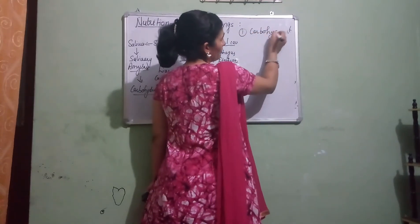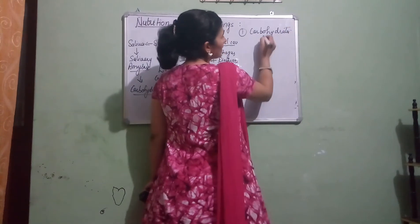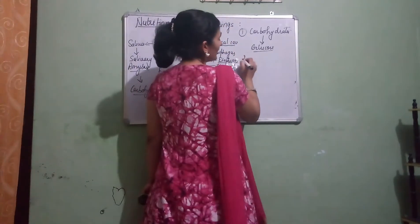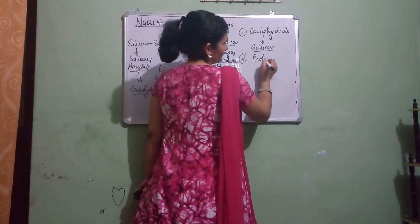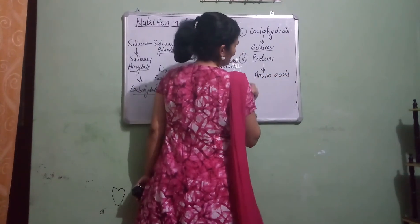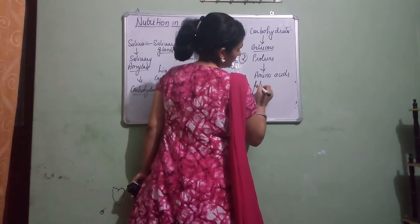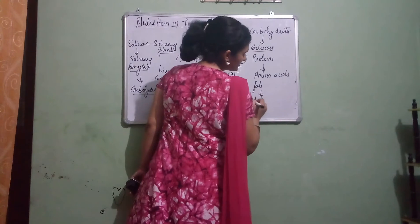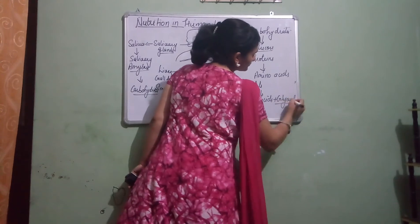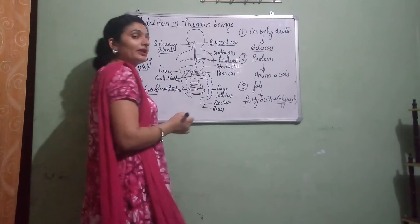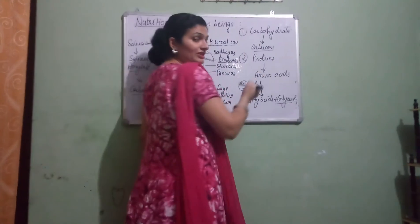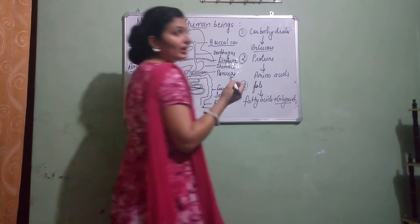When digestion takes place: carbohydrates break down to form glucose, with the help of the enzyme amylase. Proteins break down to form amino acids. And fats break down to form fatty acids and glycerol. All the complex particles get broken down with the help of enzymes — carbohydrates with amylase, proteins with trypsin and pepsin, and fats with lipase.